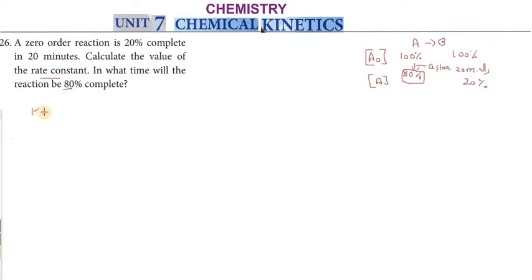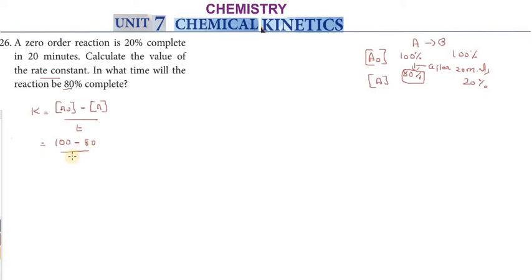For a zero order reaction, the formula is: k = (A0 - A) / T. A0 value is 100, A is 80 (since 20% is complete), so: k = (100 - 80) / T, which is (100 - 80) / 20 minutes.